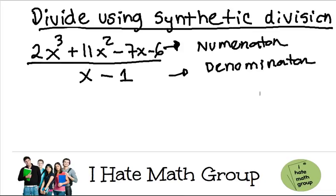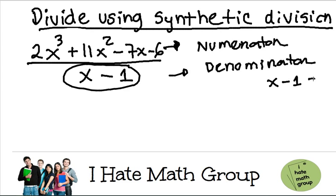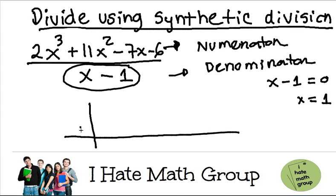The first step is to figure out how you're going to divide this. Grab the denominator and make it equal to 0, and then solve for x. In this case, x equals 1. That is the number that you're going to be putting right here.